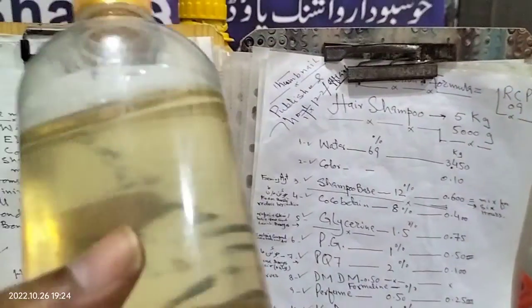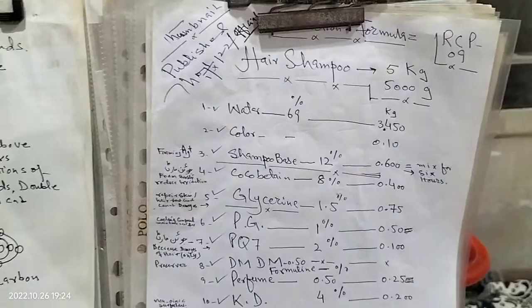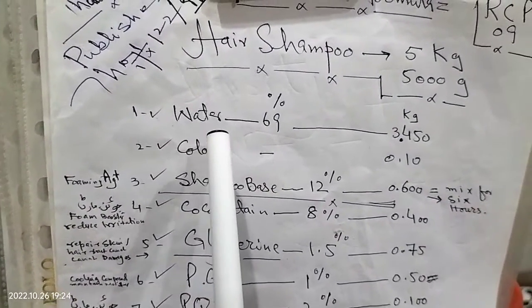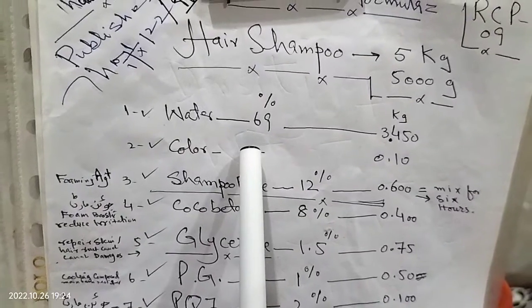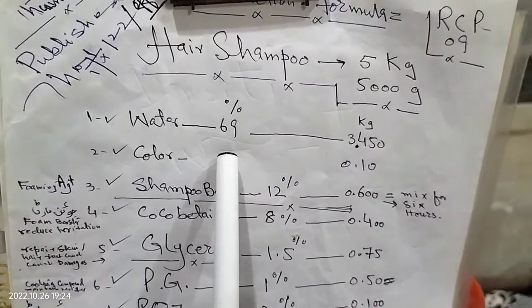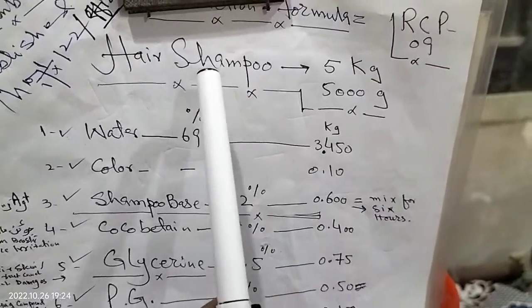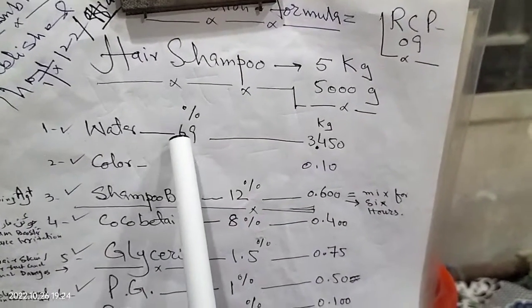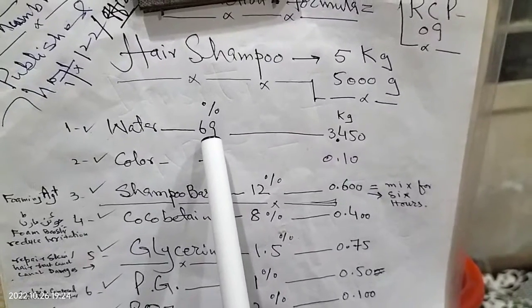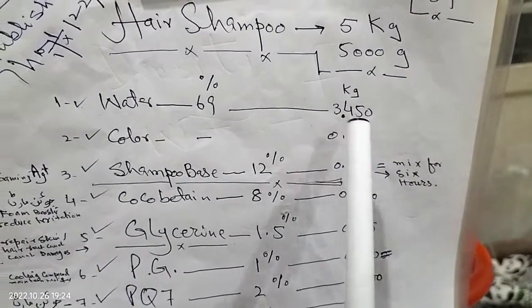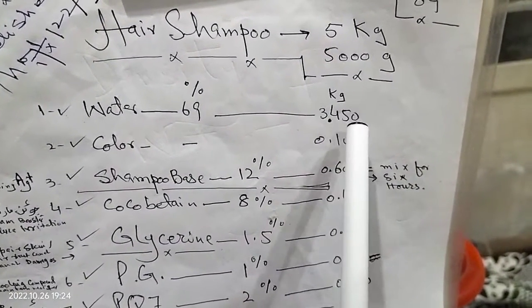This is my product. Hair shampoo. Water 69%. We make a 5 kg hair shampoo. Water 69%, 3450 gram.